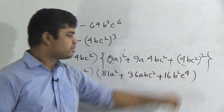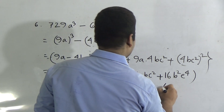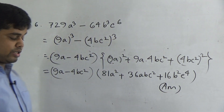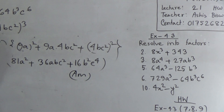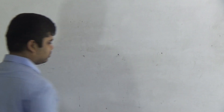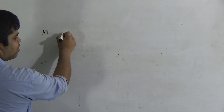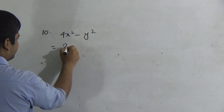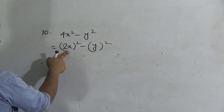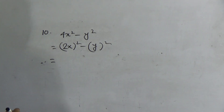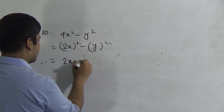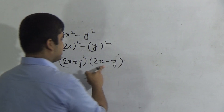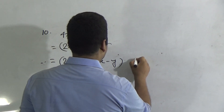Our last question, number 10: 4x² − y². This is an easy question. Notice 4x² = (2x)², so we have (2x)² − y². The a² − b² formula is applicable here. The formula is (a + b)(a − b), where a means 2x and b means y. So the answer is (2x + y)(2x − y). This is the factored form of 4x² − y².